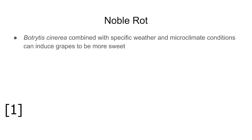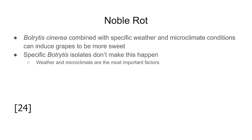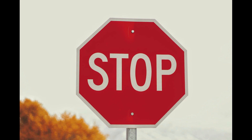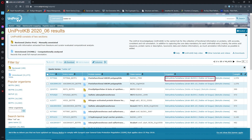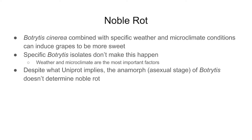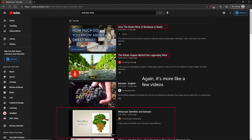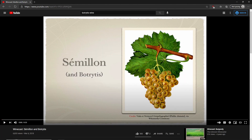There is at least one case where Botrytis cinerea has a beneficial function. The condition is called noble rot — when the presence of Botrytis cinerea combined with specific weather conditions results in a much sweeter wine. However, it's been shown that it's the particular weather conditions, not the Botrytis isolates, that result in noble rot. There's no difference between the Botrytis of noble rot and the Botrytis of gray mold — they're the same isolates.